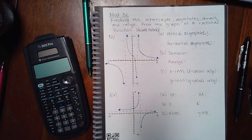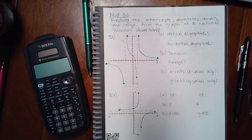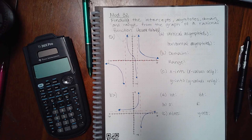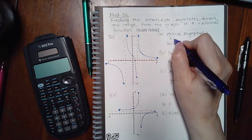Asymptotes are basically invisible lines. And if you want to know what the vertical asymptotes are, you have to find equations for those vertical lines. We know that the equations for vertical lines are always in the form x equals a number.